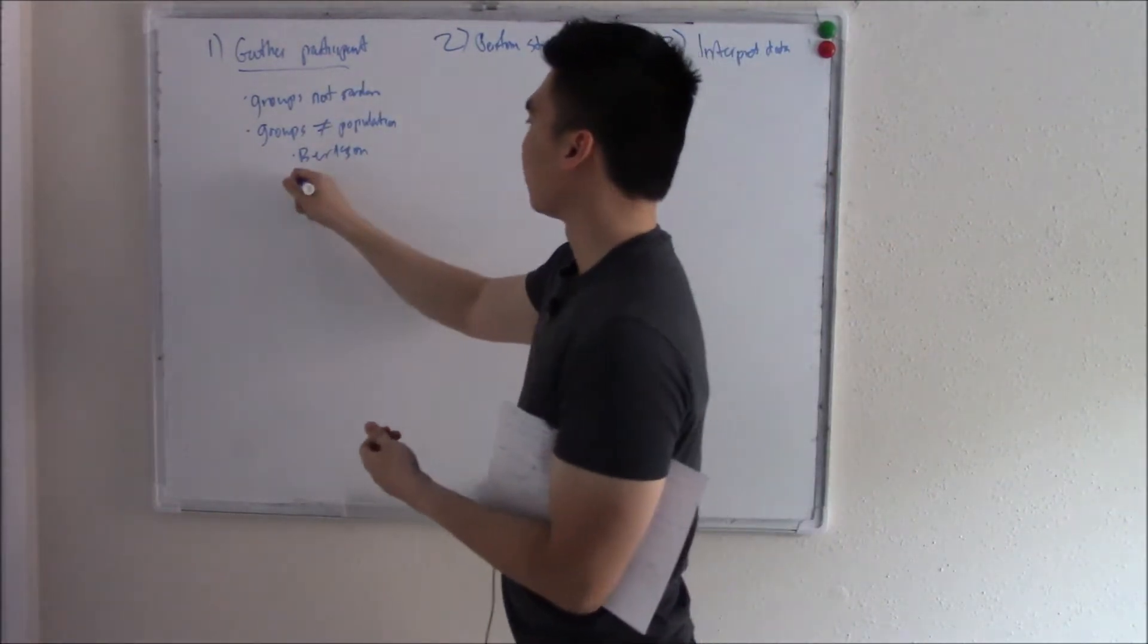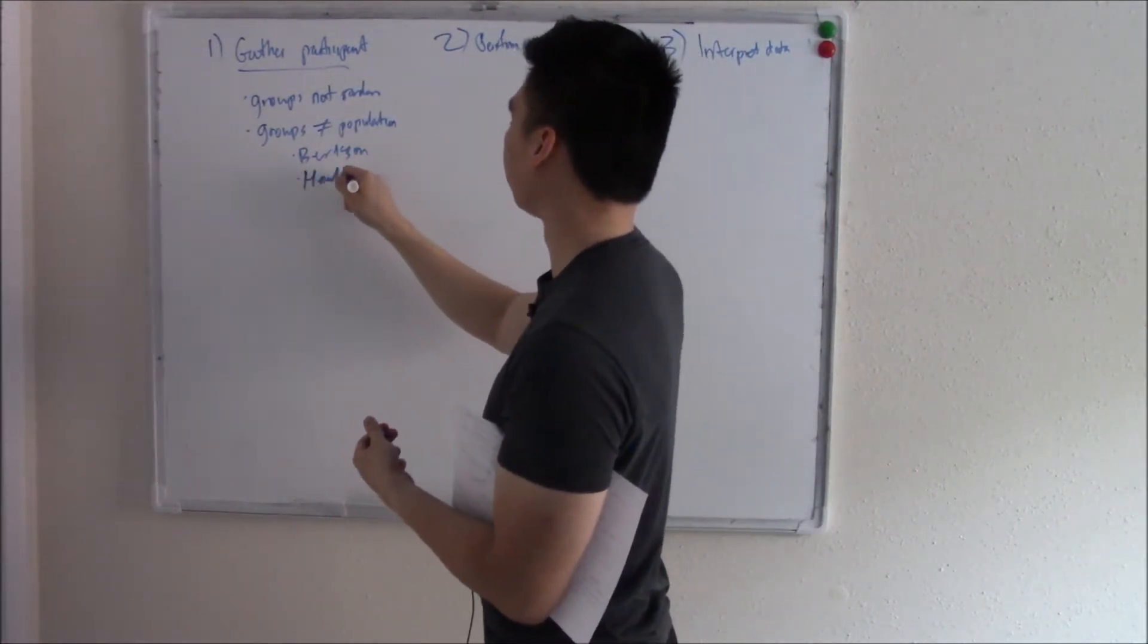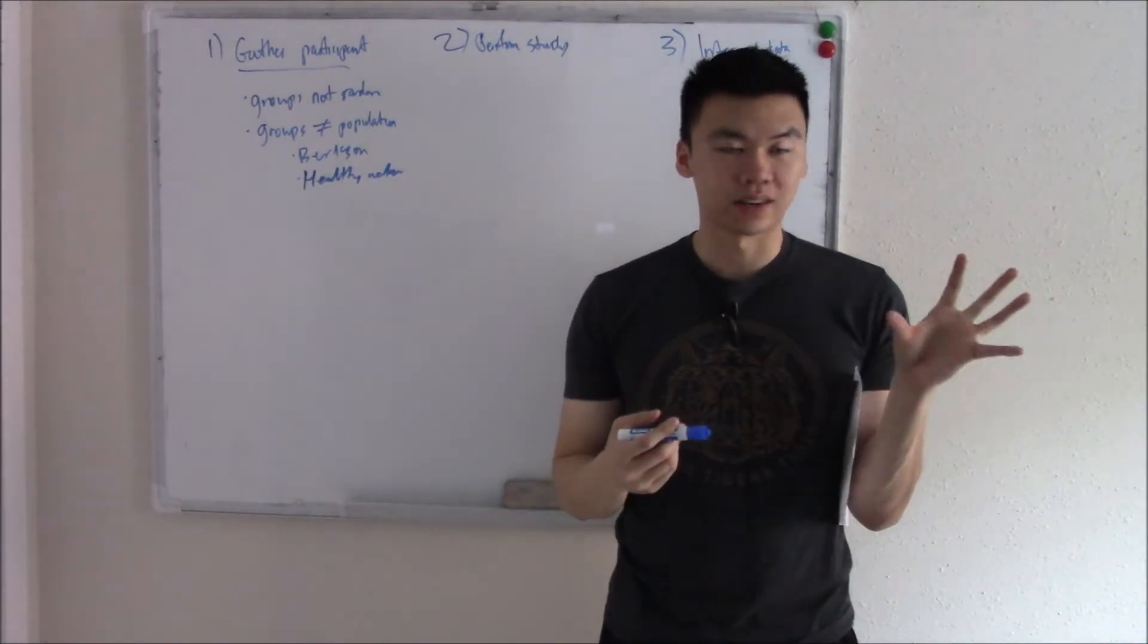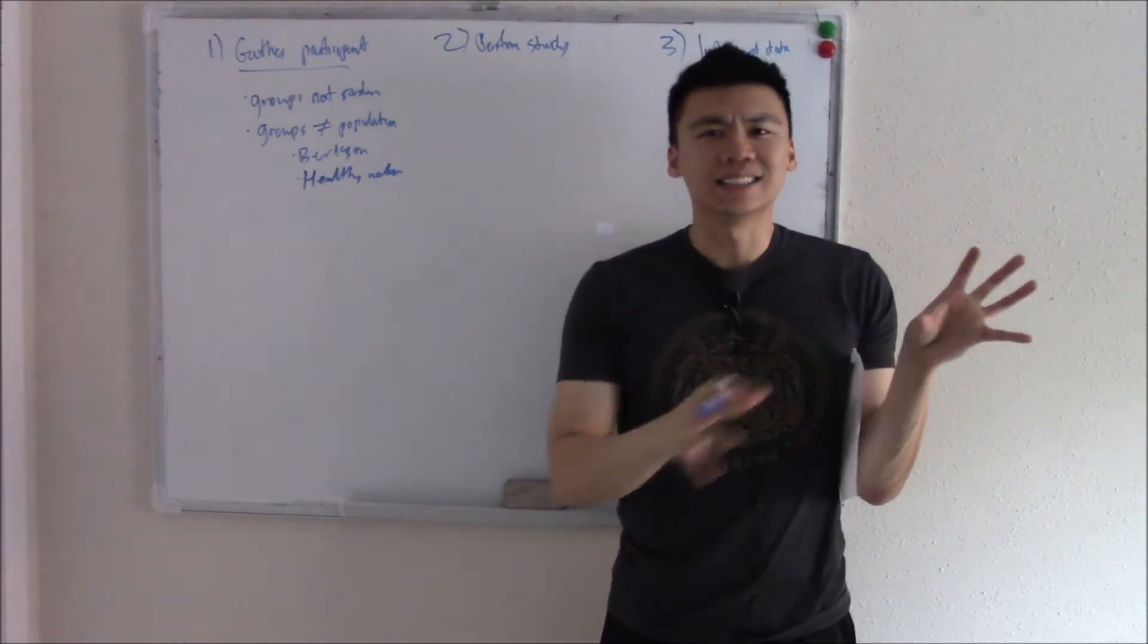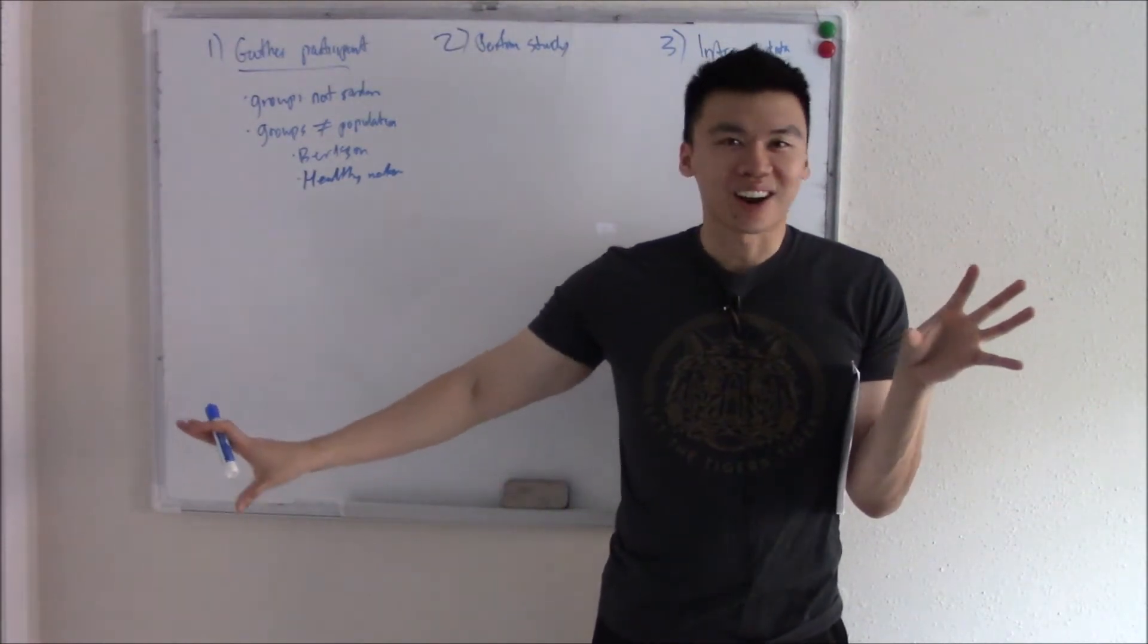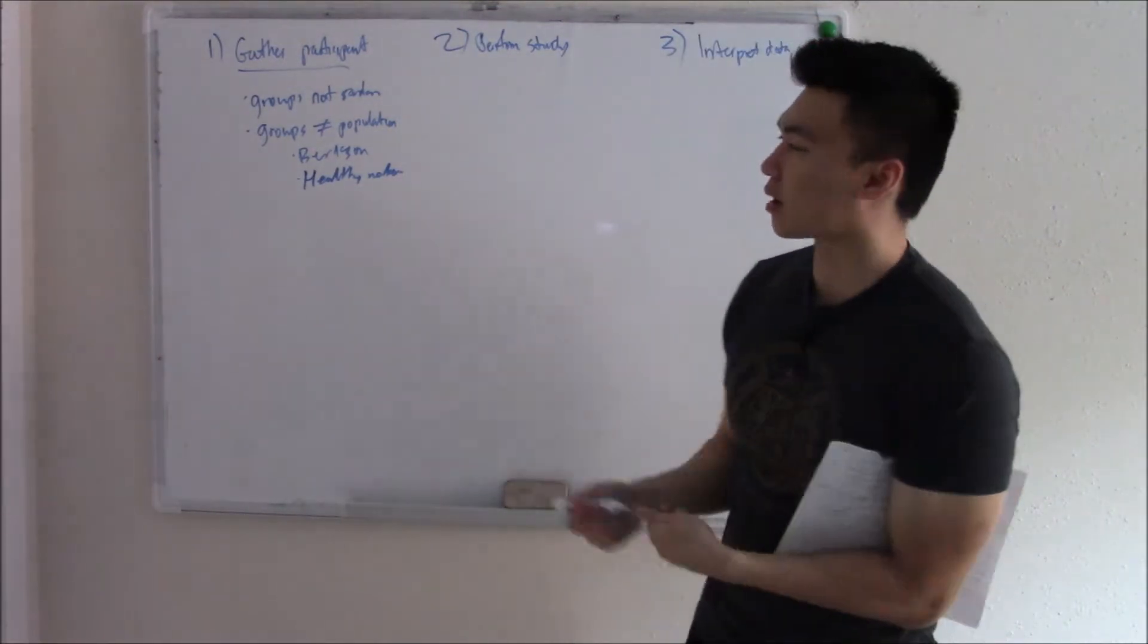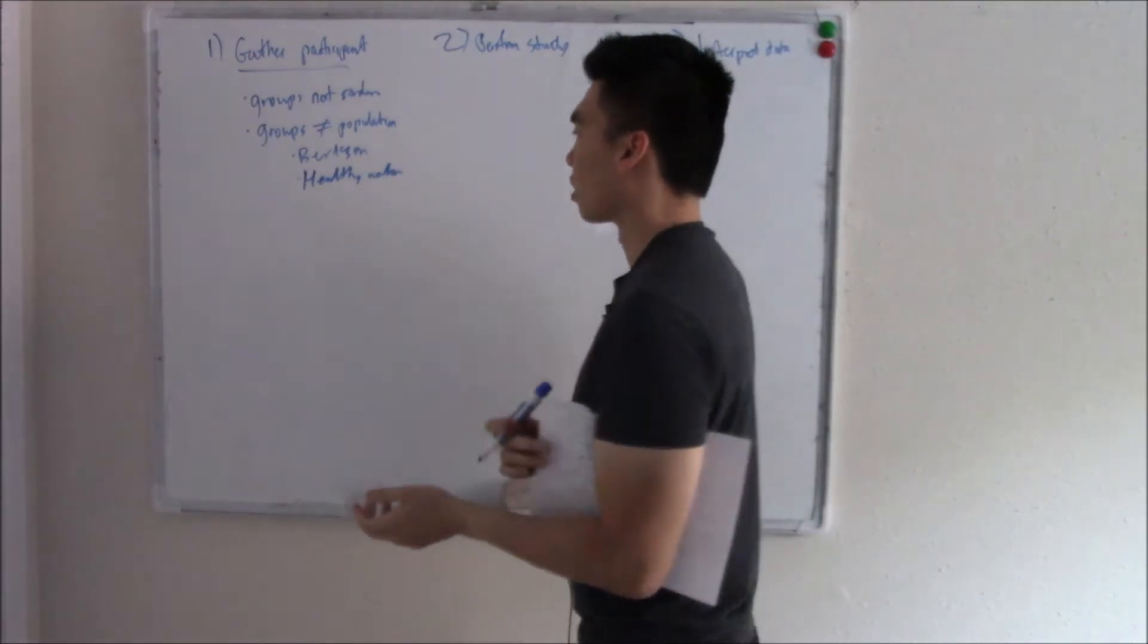The opposite of that is the healthy worker effect. What if you recruit a bunch of 20-year-old athletes that don't have anything wrong with their health? That's not indicative of the general population. We're not all 20-year-old athletes that are just super healthy. That's called the healthy worker effect.